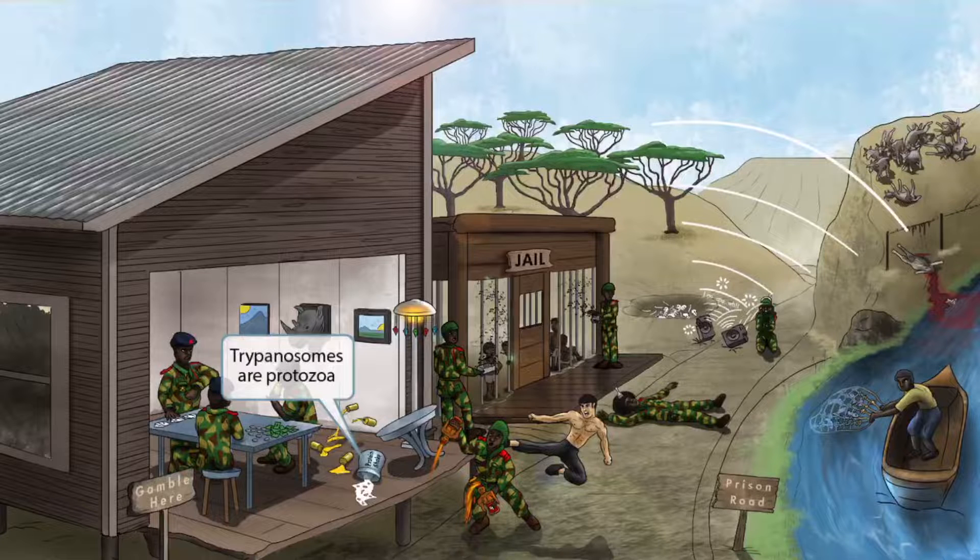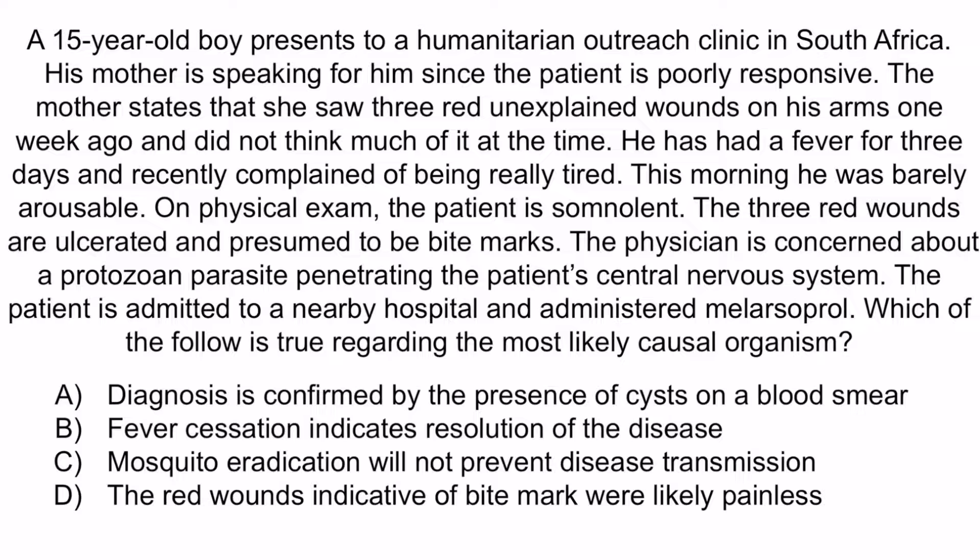Now let's review with a question. A 15-year-old boy presents to a humanitarian outreach clinic in South Africa. His mother is speaking for him since the patient is poorly responsive. She saw three red, unexplained wounds on his arms one week ago. He has had a fever for three days and recently complained of being really tired. This morning he was barely arousable. On physical exam, the patient is somnolent. The three red wounds are ulcerated and presumed to be bite marks. The physician is concerned about a protozoan parasite penetrating the patient's CNS. The patient is admitted and administered melarsoprol. Which of the following is true regarding the most likely causal organism? A. Diagnosis is confirmed by the presence of cysts on a blood smear. B. Fever cessation indicates resolution of the disease. C. Mosquito eradication will not prevent disease transmission. D. The red wounds indicative of bite marks were likely painless.